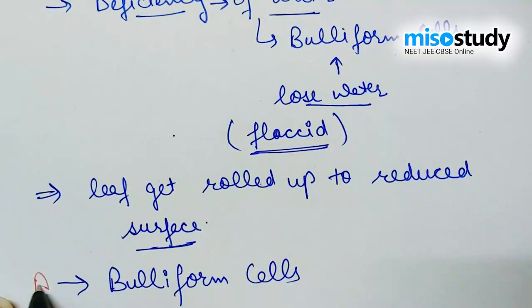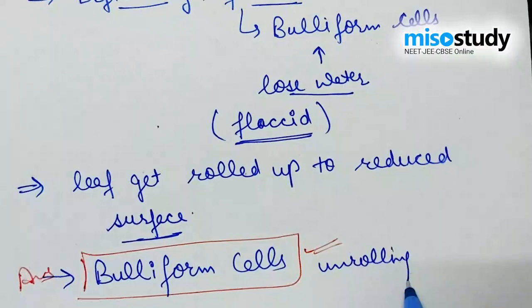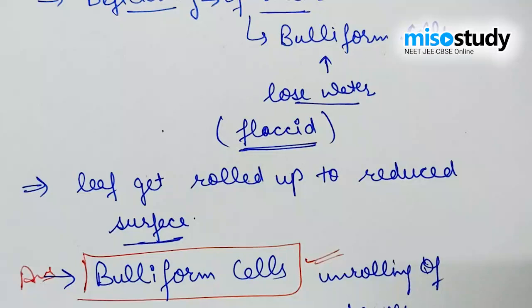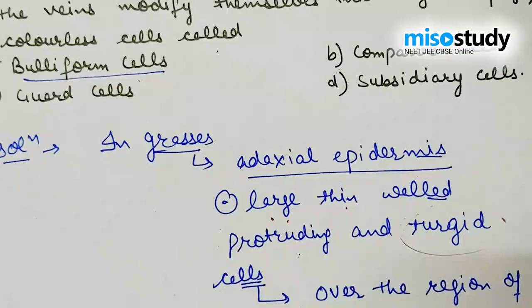Bulliform cells also help in unrolling of leaves during development. So the right answer is option A — bulliform cells. Let's move to the next question.